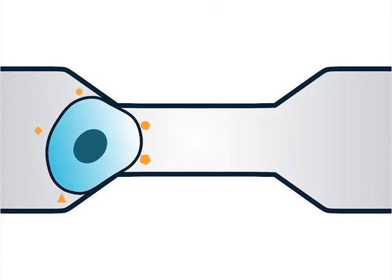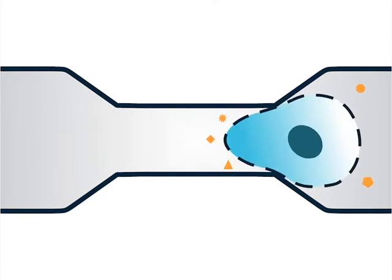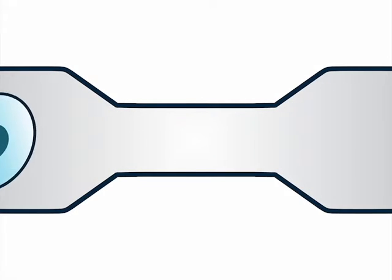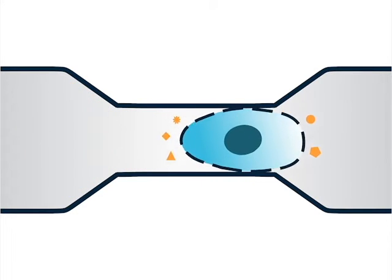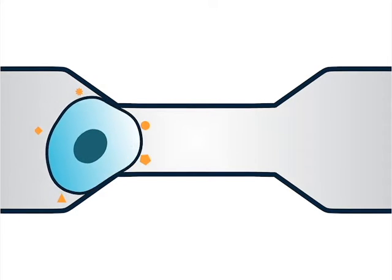In the constriction the cell is squeezed opening transient pores in its membrane. This phenomenon occurs with almost any cell type and different constriction geometries are designed to suit each cell type.